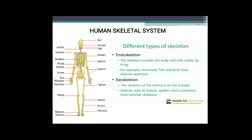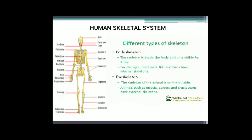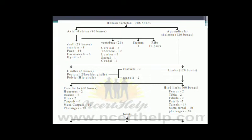The human skeletal system is divided into two types: endoskeletal system and exoskeletal system. The endoskeleton lies inside the body and is only visualized by X-rays, seen in mammals, fish, and birds. The exoskeleton is on the outside, seen in insects, spiders, and crustaceans. The human endoskeleton consists of 206 bones categorized into axial endoskeleton with 80 bones and appendicular endoskeleton with 126 bones.